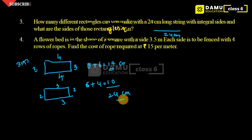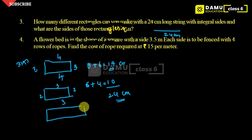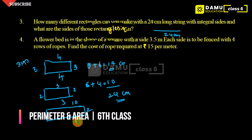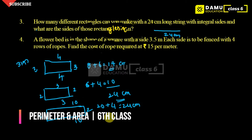Then adding both parts gives 24 centimeters total. You can also make it directly like this: 2 and 2, then 10 and 10. So 10 plus 10 is 20, plus 2 plus 2 is 4, making 24 centimeters. So many different rectangles like that can be made.